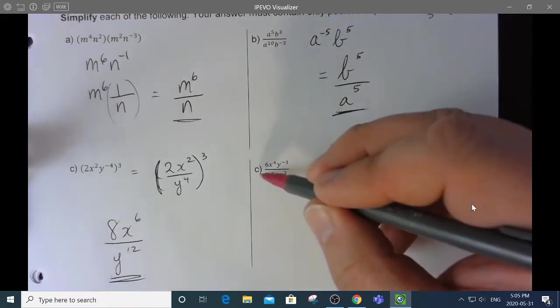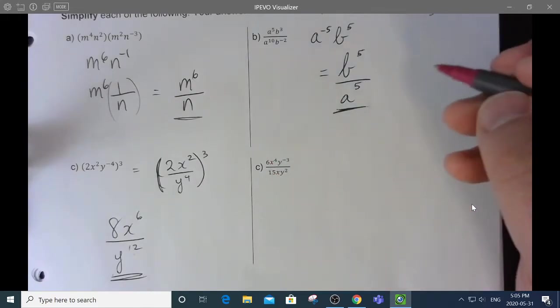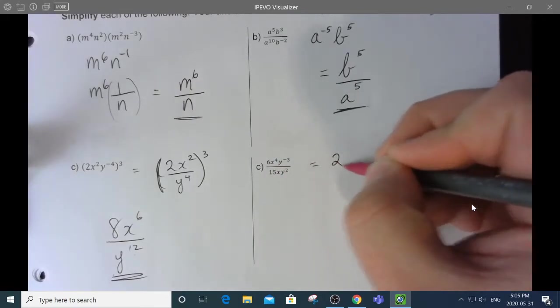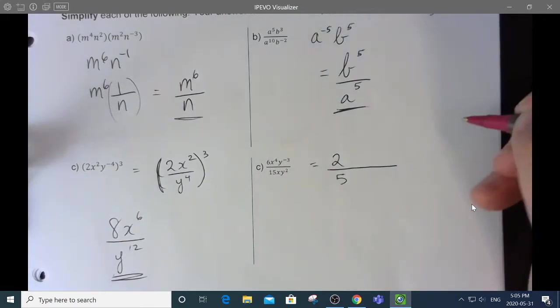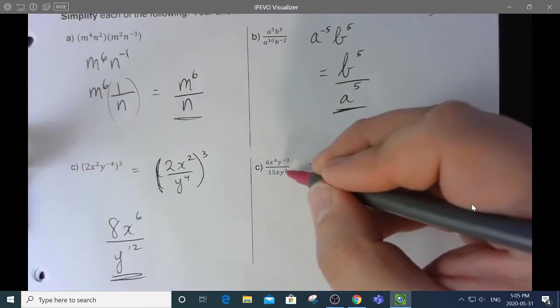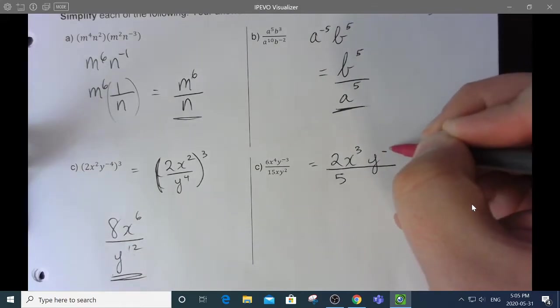Looking at the next one. 6 and 15 both have a common factor of 3. So, this is actually going to be 2 and 5. x to the 4 divided by x is x to the 3. And y to the 3 divided by y squared is y to the negative 5.